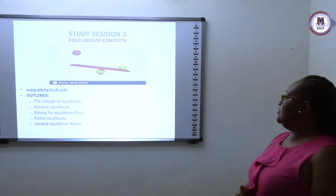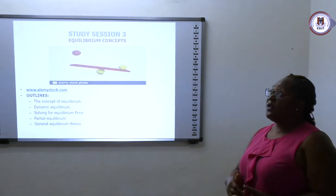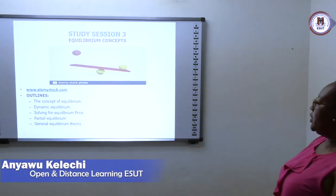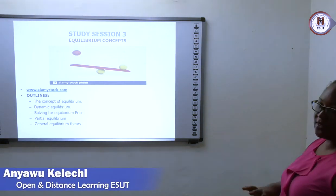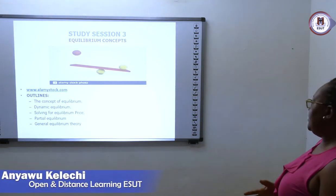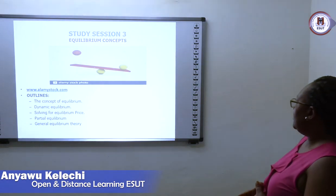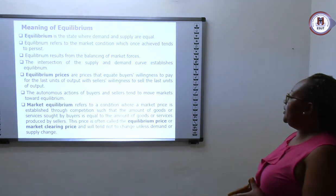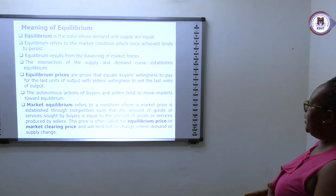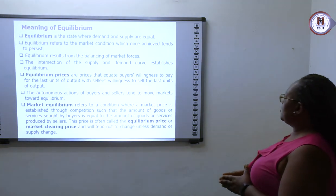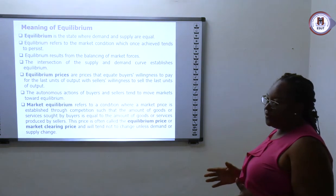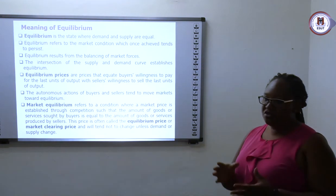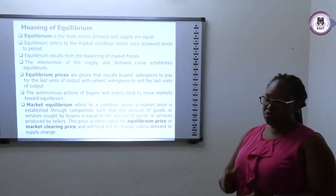Having seen the demand side of the economy and the supply side of the economy, let's look at the equilibrium and see how they reach it. We'll look at equilibrium as a state where demand and supply are equal. In economics, the general note is that equilibrium is a situation where demand is equal to supply.